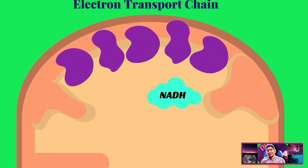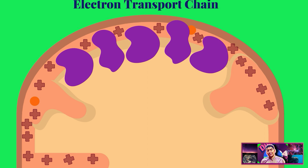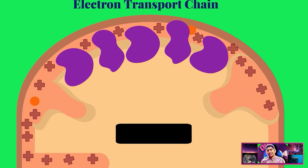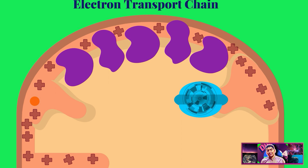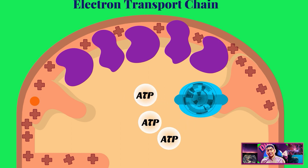As high-energy electrons pass down the electron transport chain, hydrogen ions move across the inner membrane as well. As a result, the inner membrane becomes positively charged relative to the matrix. So the hydrogen ions rush back to the matrix through ATP synthase. The movement of hydrogen ions rotates the base of ATP synthase, and each full rotation transforms an ADP molecule into an ATP molecule. On average, a pair of high-energy electrons provides enough energy to produce three ATP molecules.